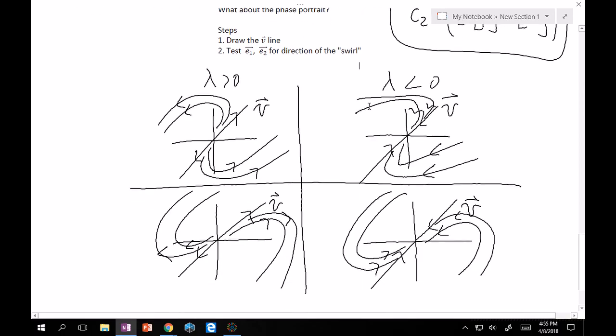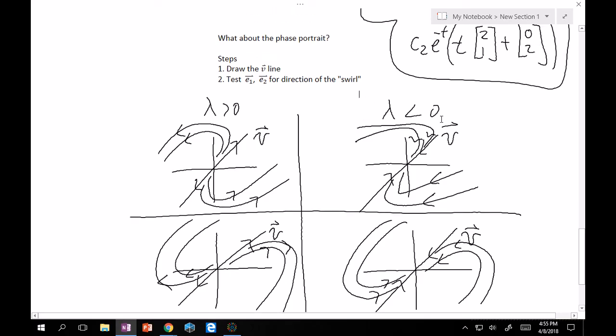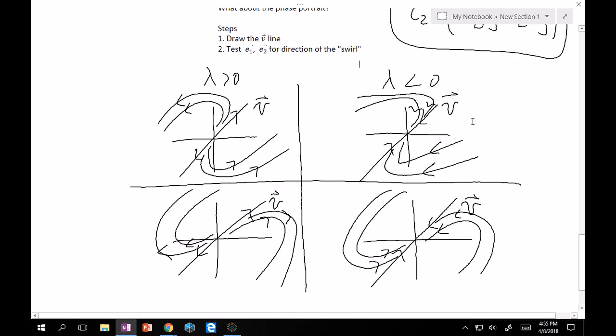Great. Now, what about phase portraits? Okay. So, the steps for this one are a little bit different. You just draw the eigenvector line. Don't draw the W line. So, in our last example, just draw the 2, 1 line at first. And then, you test 1, 0, and 0, 1, the E1 and E2 vectors for the direction of the swirl. And by the swirl, I mean, look at these four examples that I have right here.